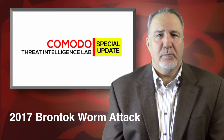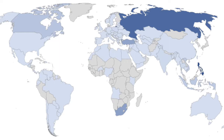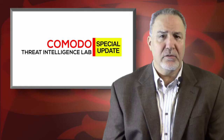Brontoc, which is Indonesian for eagle, is a family of worm malware first discovered by Threat Intelligence Labs in 2005. The 2017 variant has been used in a wide-scale attack with huge numbers of continued detections in August in Russia and later in Canada. A mass mailer worm attacking Microsoft Windows devices, Brontoc arrives with a spoofed address taken from infected computers, making it appear to be from a friend, colleague, or other acquaintance.